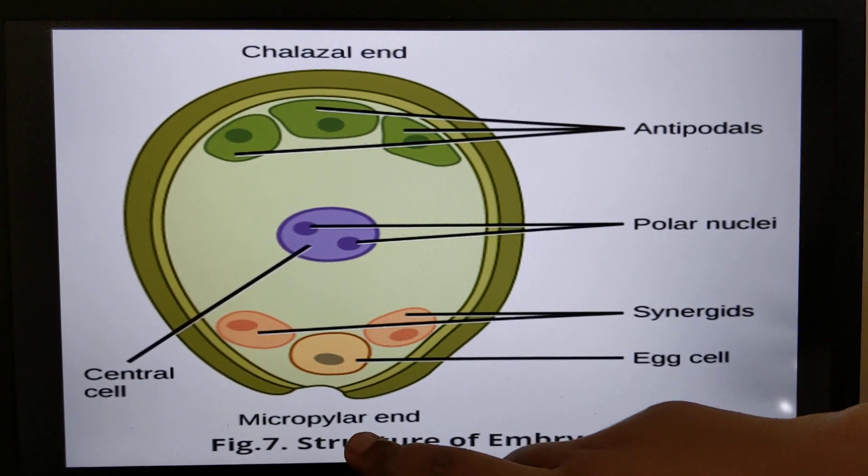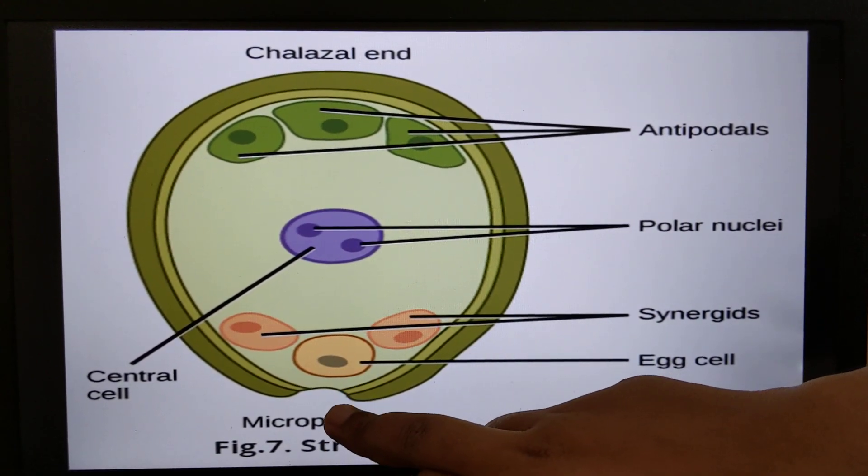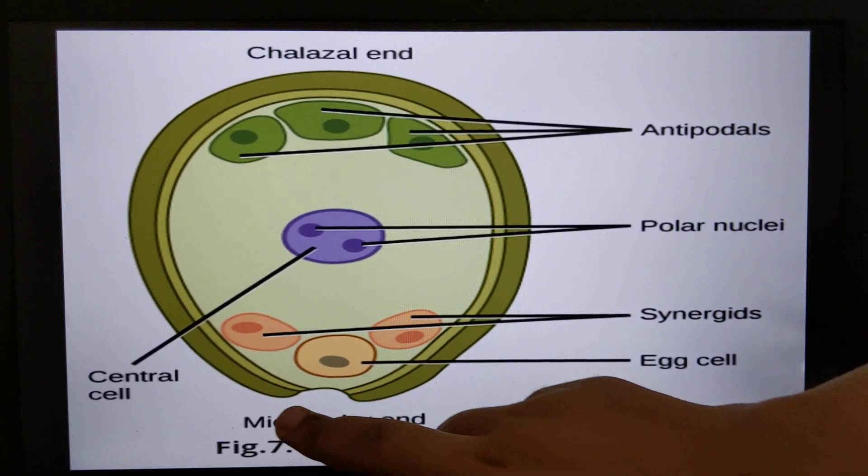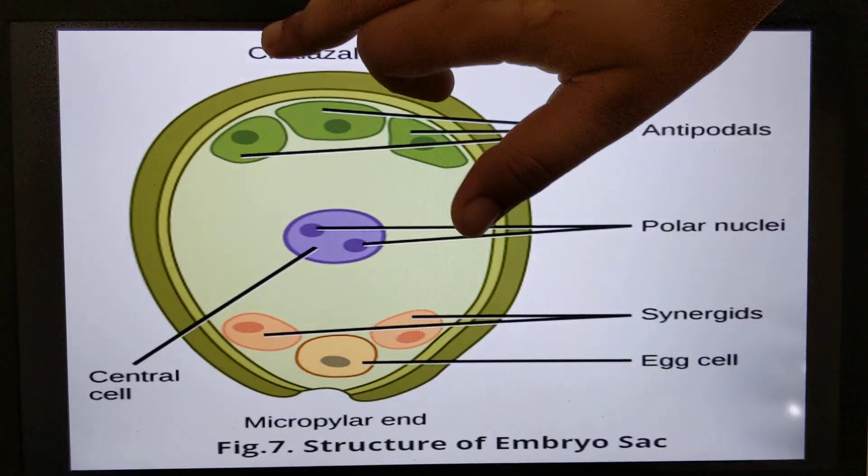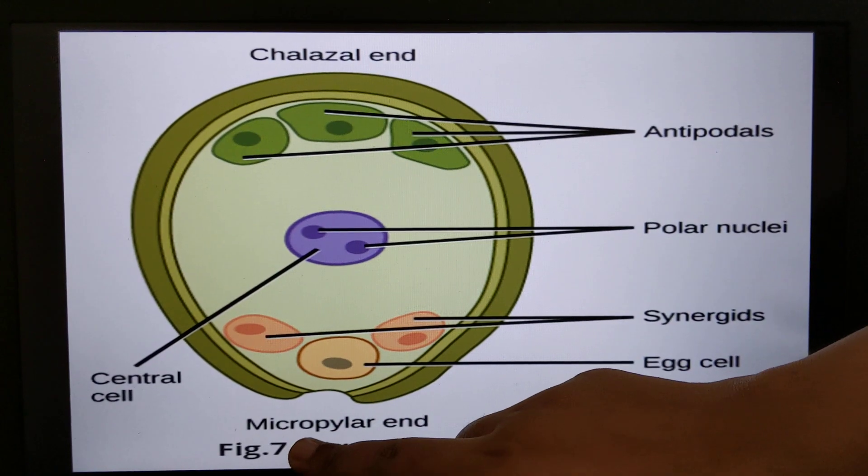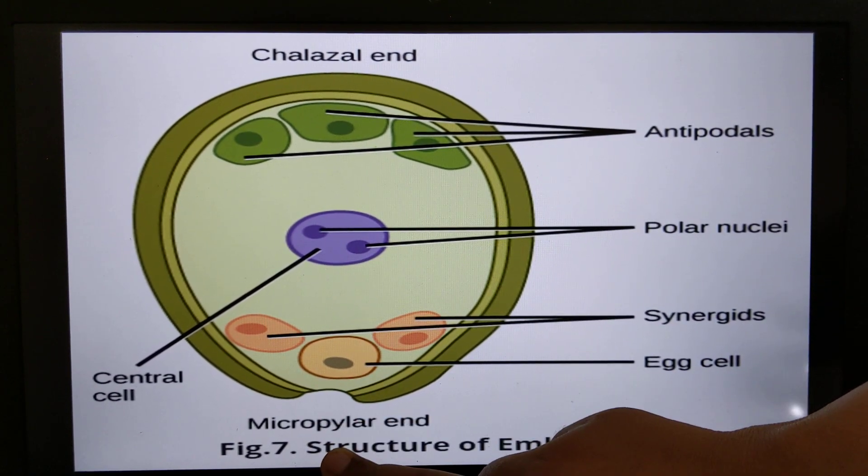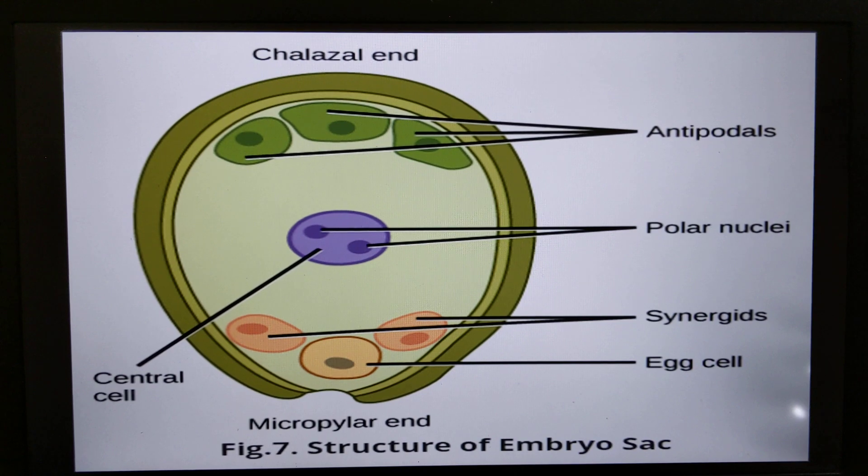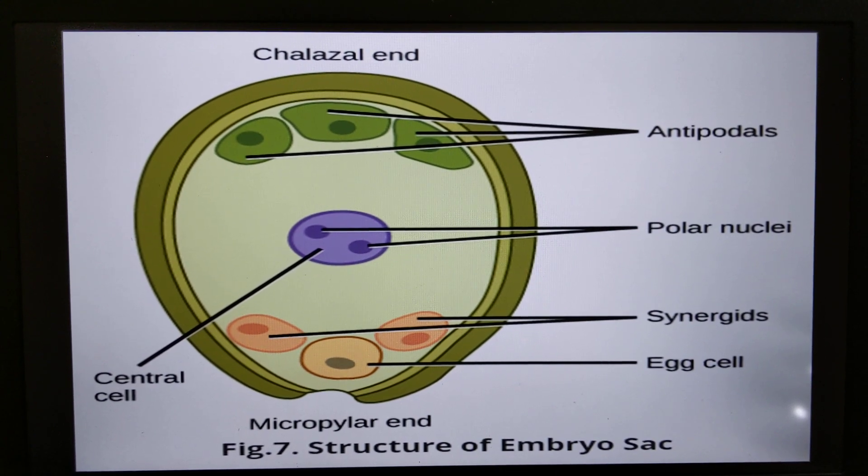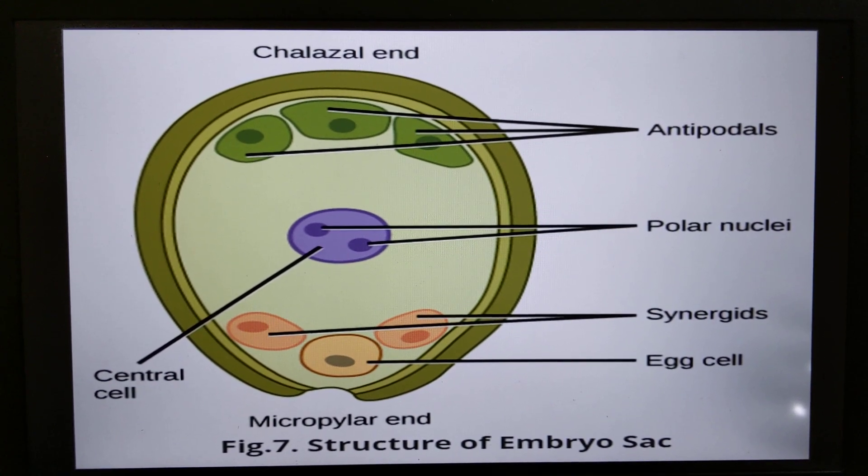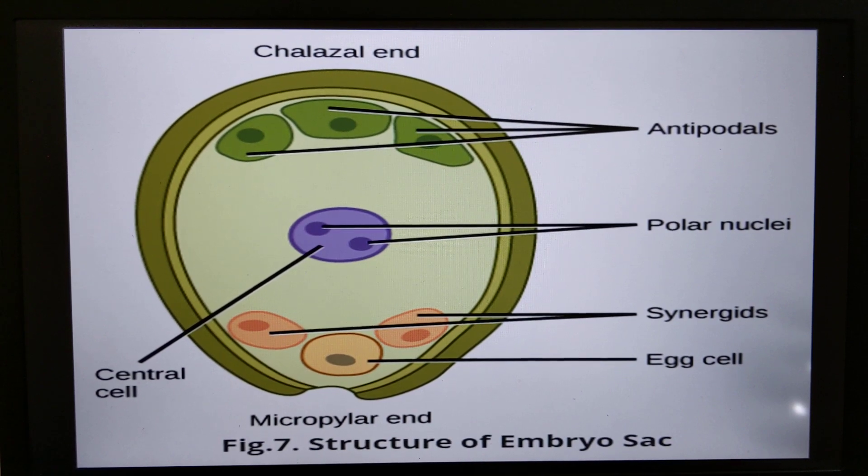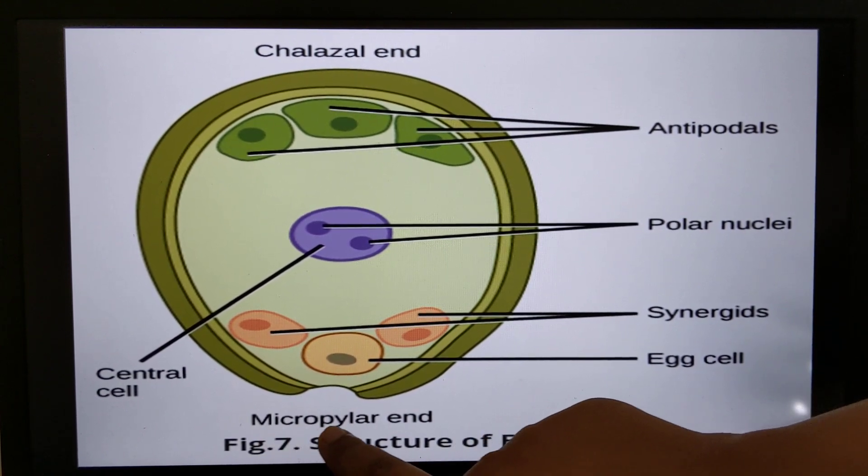If you remember, we have seen the structure of ovule which contains two ends: micropylar end and chalazal end. In angiosperms the ovule is anatropous. What is the meaning of anatropous? It means the micropylar end is downward.